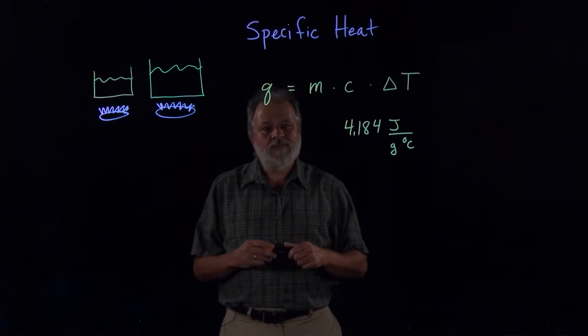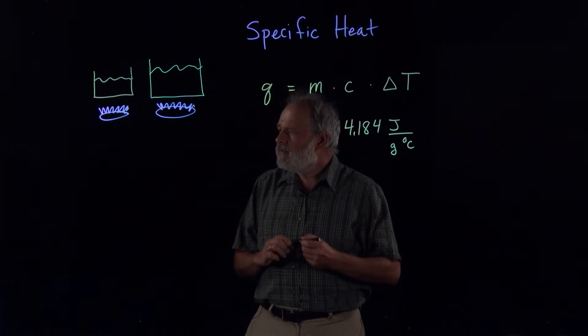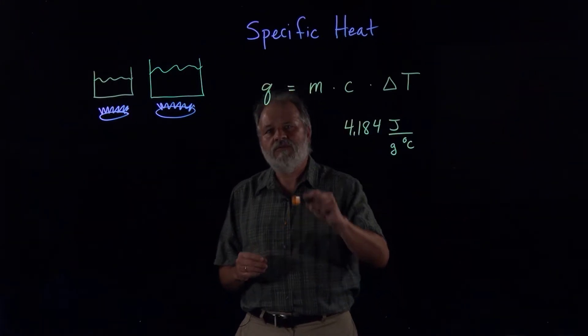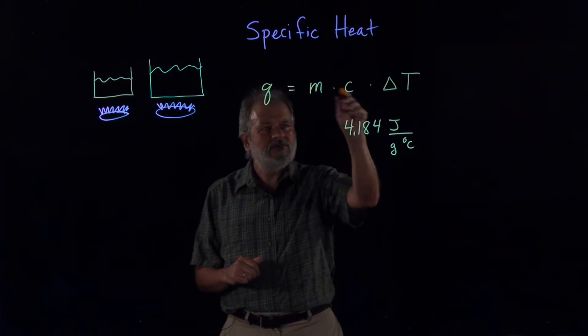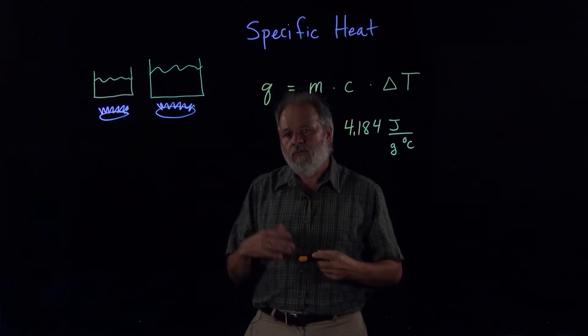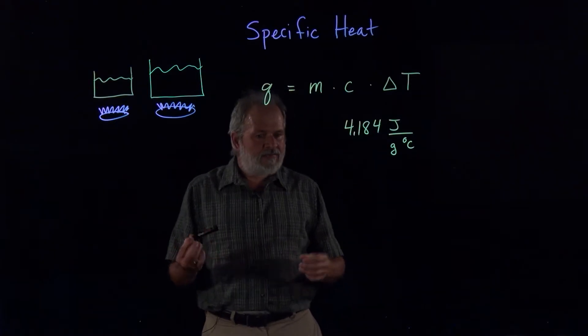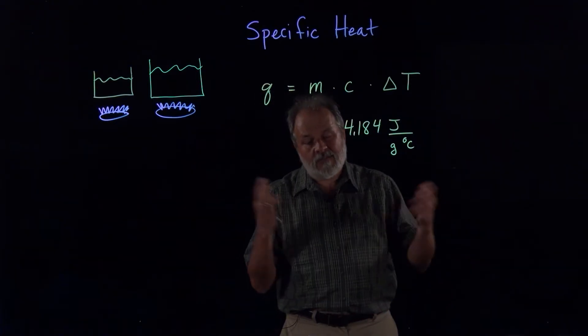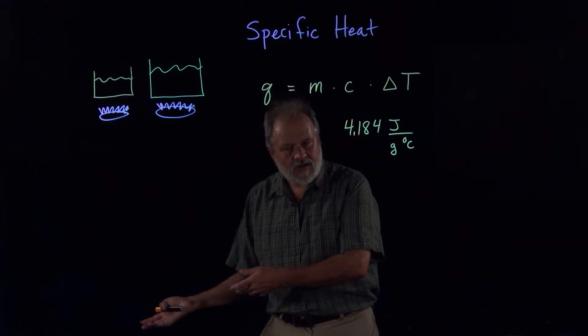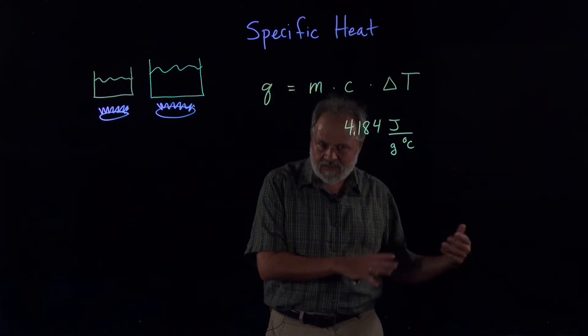So we're going to work a specific example, but we're going to do it backwards because what we're going to do is we're going to actually measure the heat and solve for the heat capacity of a different substance besides water. And one way you would measure heat is, for example, to put something in water and see how much the water heats up, then you know that the amount of heat that went into the water was the same amount as the heat that was lost by the metal.